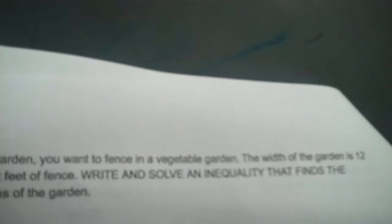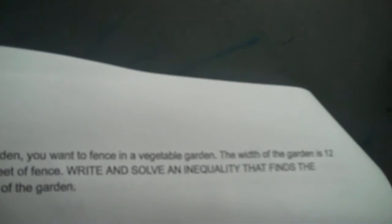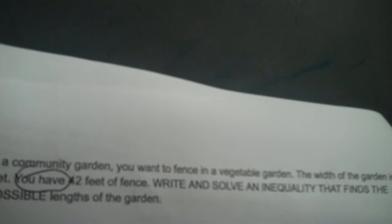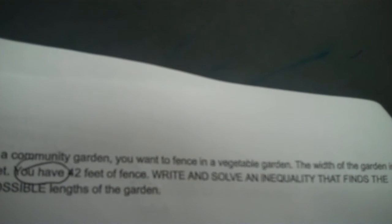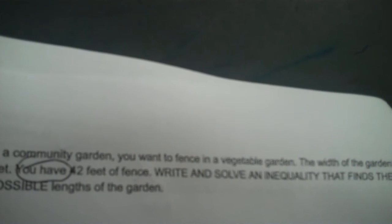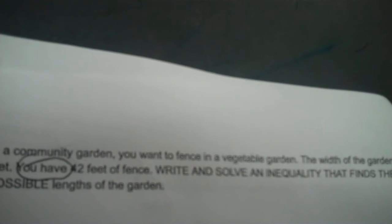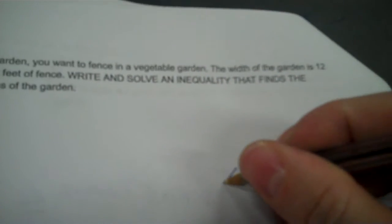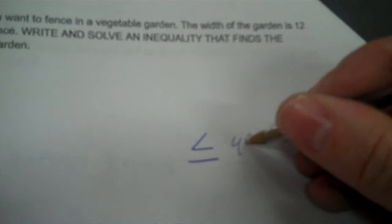In a community garden, you want to fence in a vegetable garden. The width of the garden is 12 feet. You have 42 feet of fence. Write and solve an inequality that finds a possible length of the garden. Again, it's something you have, so it's less than or equal to. So 42 feet goes on the right side.